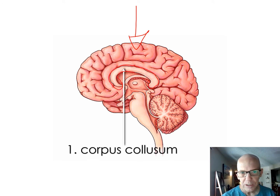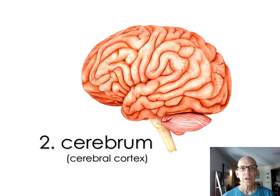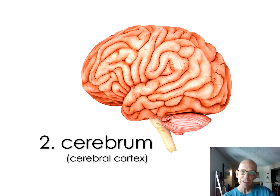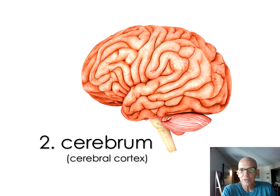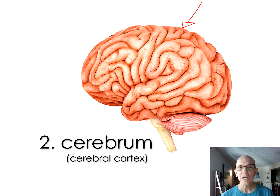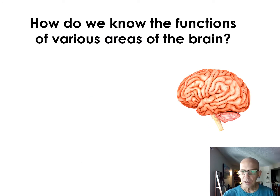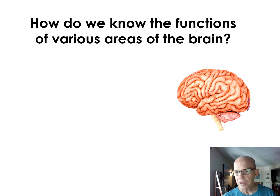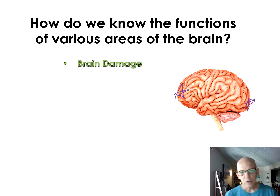Part two is called the cerebrum, or sometimes the cerebral cortex — the cortex is the outside. Think of it as the squiggly part. Now I can't just say what it does with one word because it does a lot of things. For the test, number two is going to be the most important out of all seven. How do we know what different parts do versus other parts?